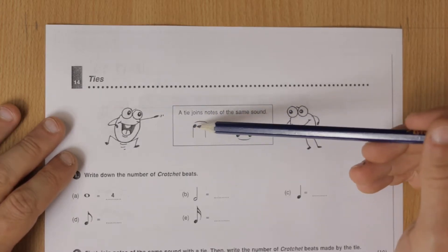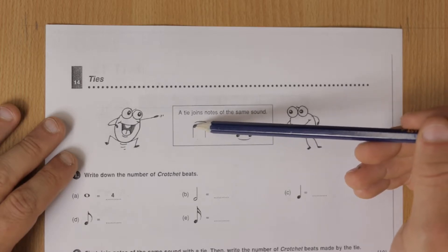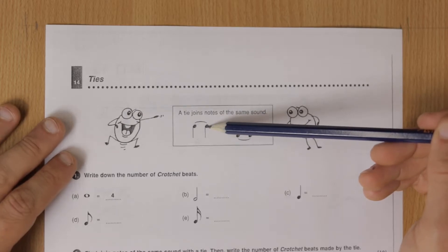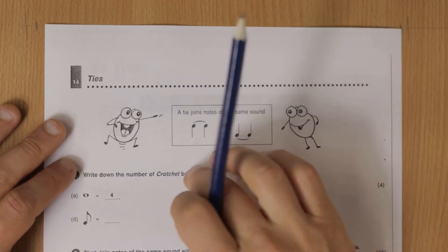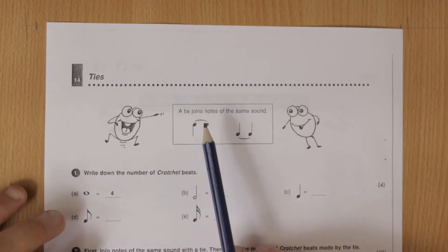Joins them so that rather than playing two separate notes you play this for two beats. You'd hold it for those two notes. So rather than just playing da da crotchet crotchet, you would hold it. So it's almost the same as writing a minim like that.